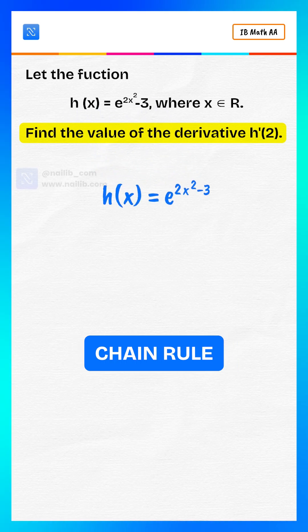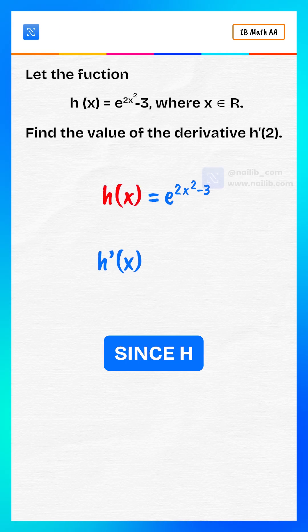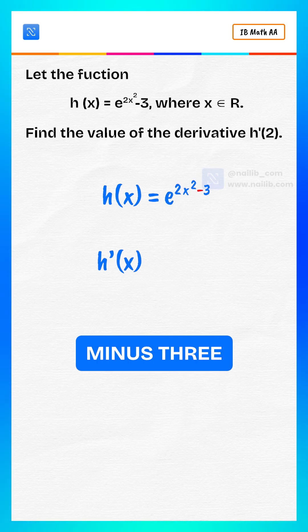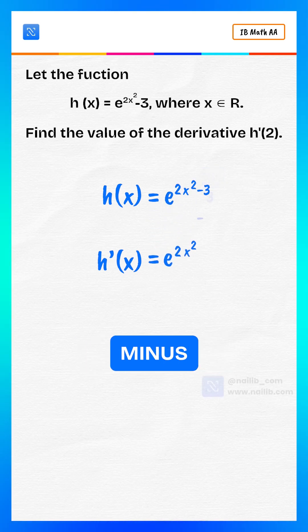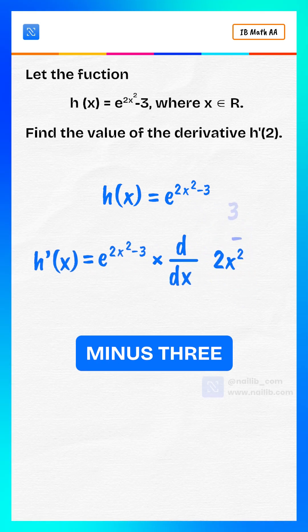We'll use the chain rule to differentiate. First, differentiate h of x. Since h of x is an exponential function, the derivative of e to the power of 2x squared minus 3 is e to the power of 2x squared minus 3 multiplied by the derivative of 2x squared minus 3.